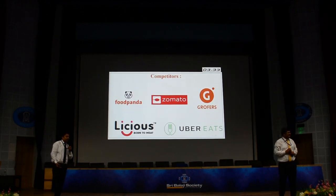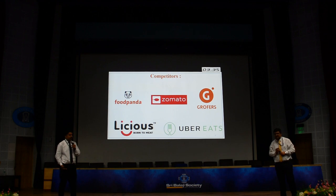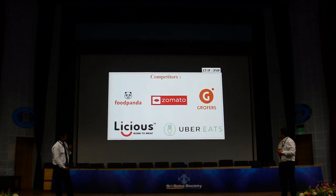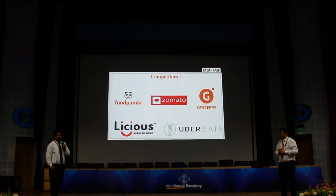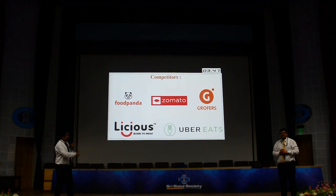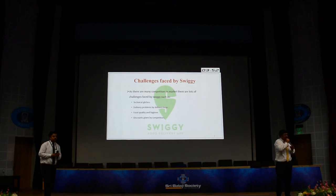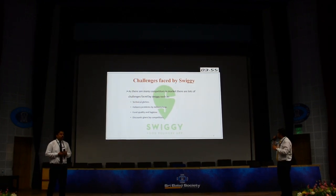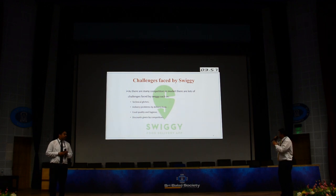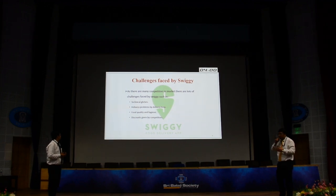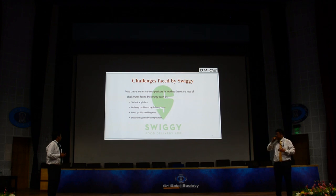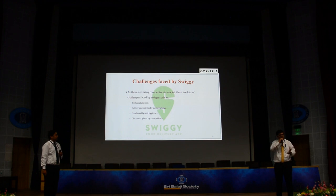Every company has competitors in the market. Swiggy's competitors include Food Panda, Zomato, Uber Eats, and — you might be surprised — Grofers. Swiggy has recently started a new venture, which we'll see in the next slide. The challenges faced by Swiggy include technical glitches, delivery problems by delivery boys, food quality and hygiene, and discounts given by competitors like Food Panda, Uber Eats, and Zomato.